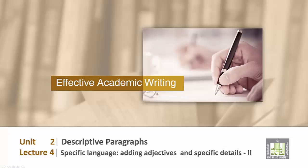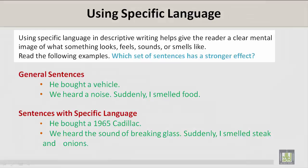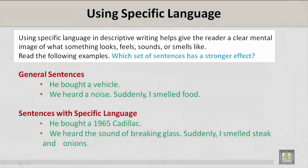Using specific language in descriptive writing helps give the reader a clear mental image of what something looks, feels, sounds, or smells like. Read the following examples. Which set of sentences has a stronger effect?